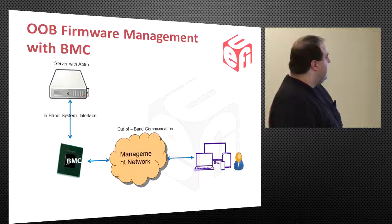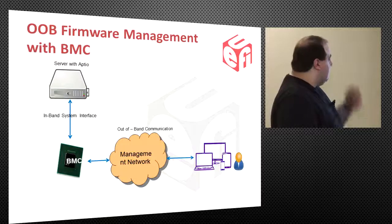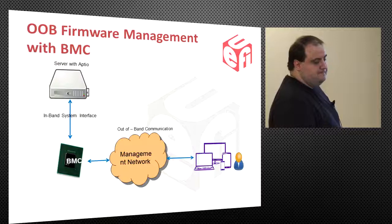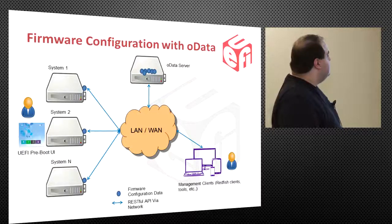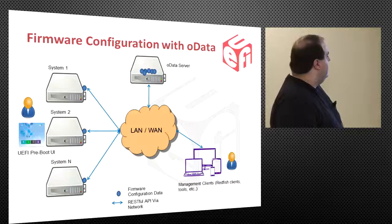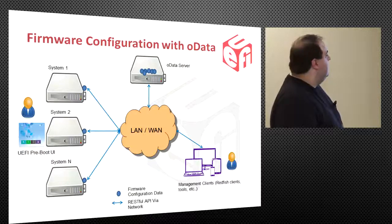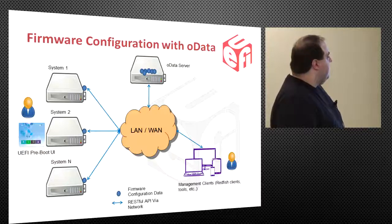Here we see a full network setup with a server that has a BMC. The server firmware talks to the BMC, the BMC talks to the network, and through the network it goes to the management client. In the second scenario using an OData server, the target systems don't have BMCs. A user can change a setting on a system, and that data gets pushed up to the OData server. The OData server then pushes that to the management client, which can make additional changes and push them back to the OData server, distributing them back out to the target systems.